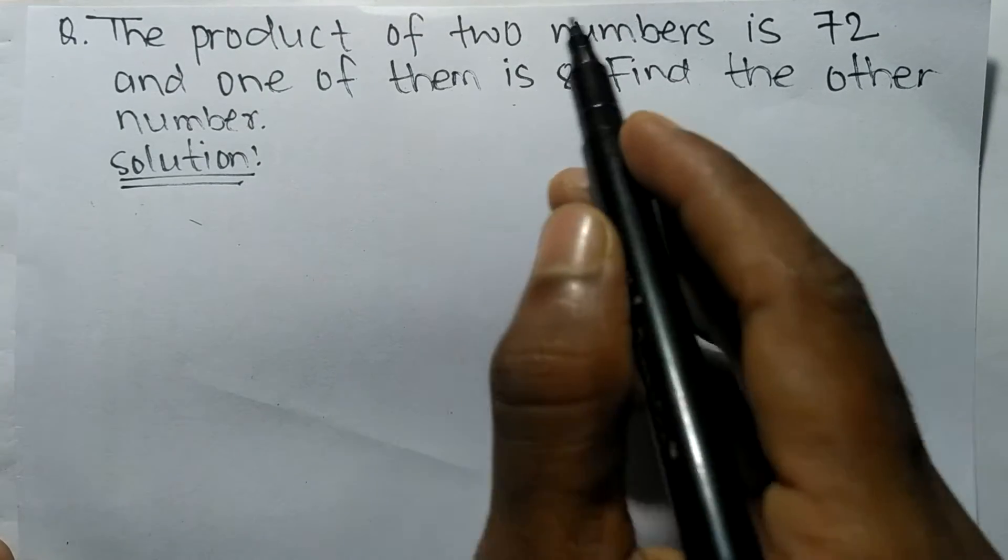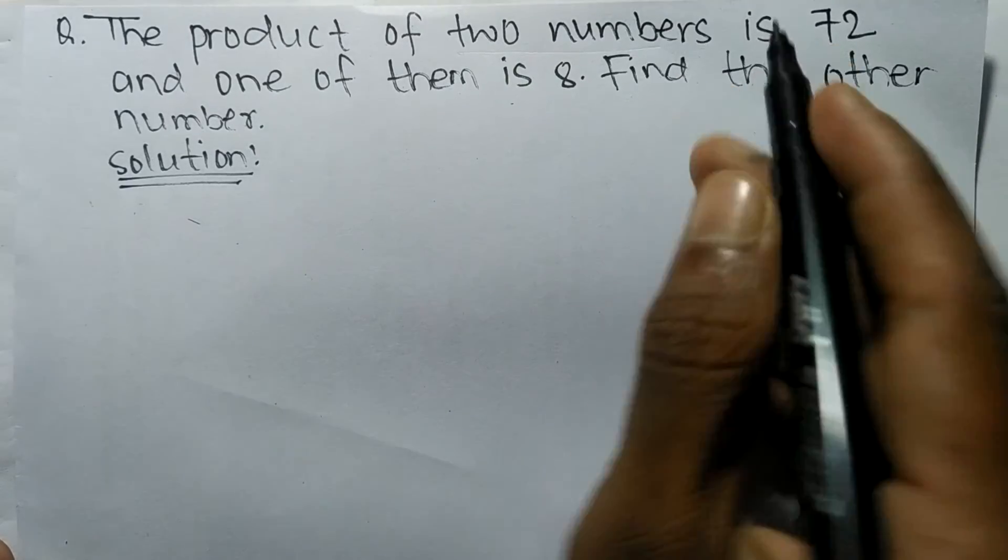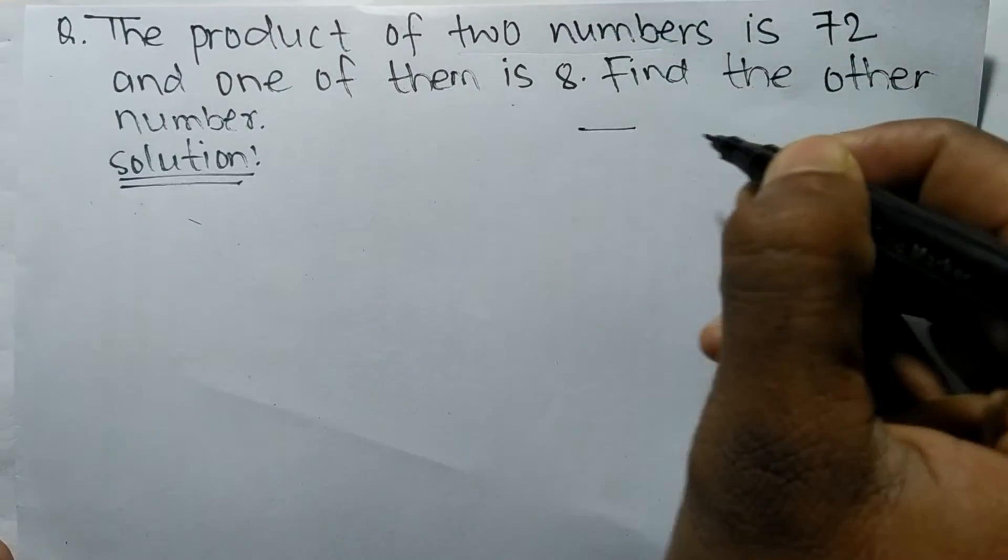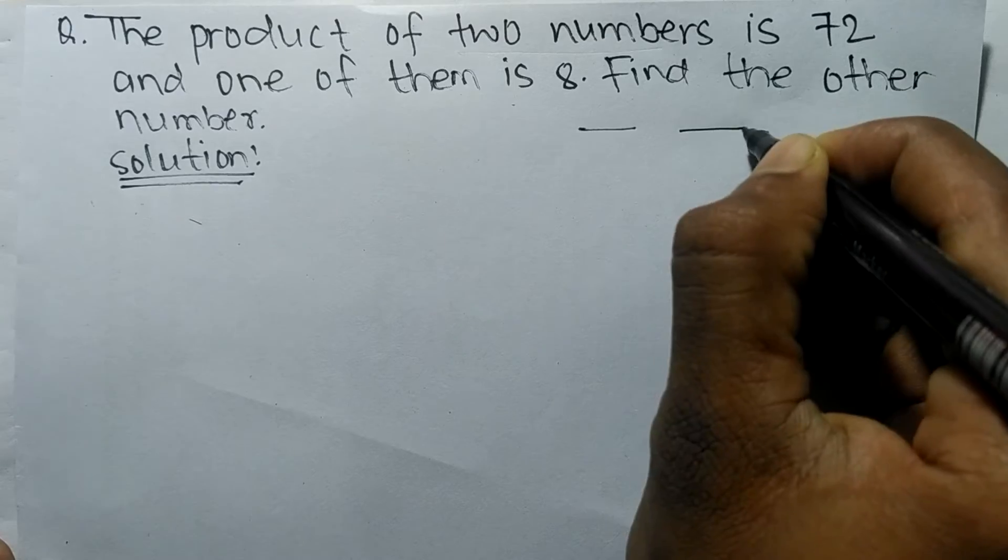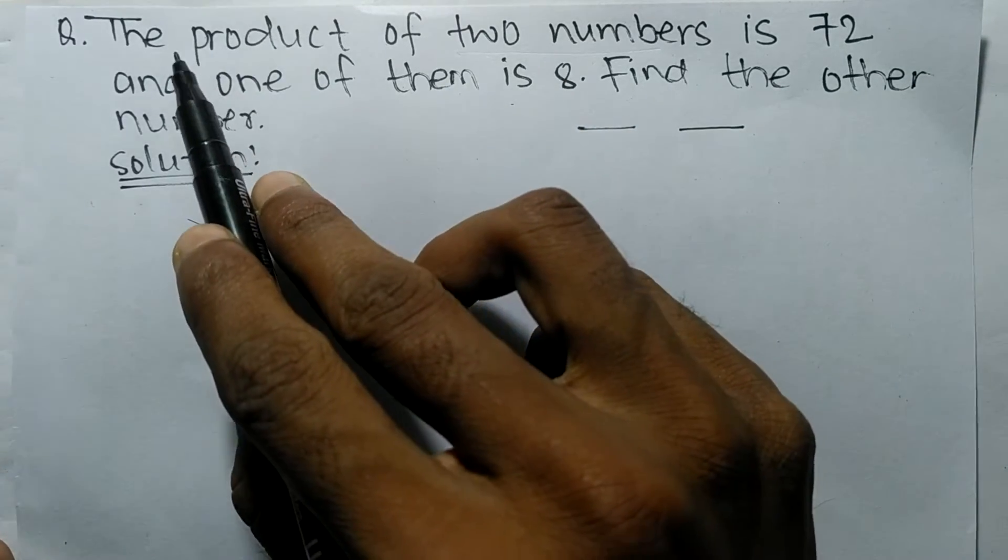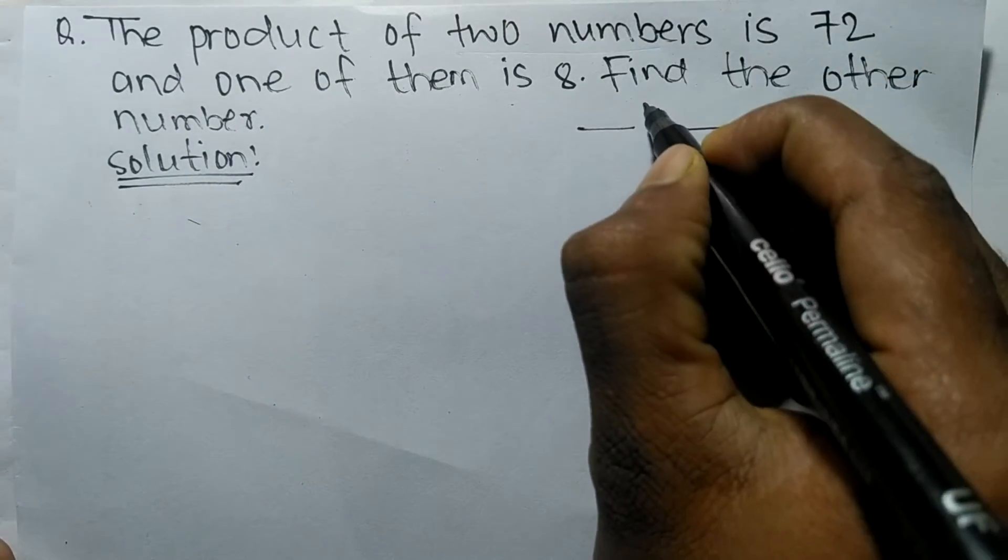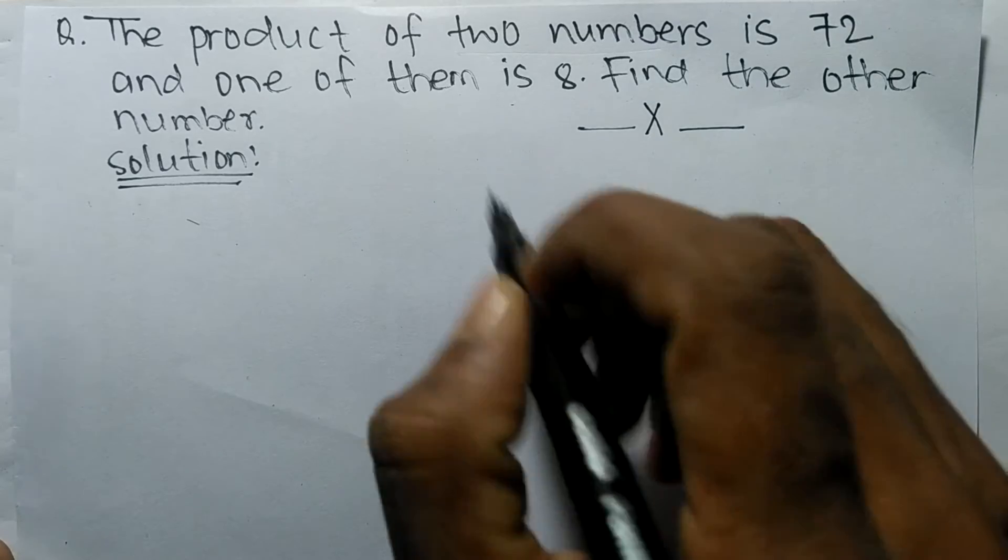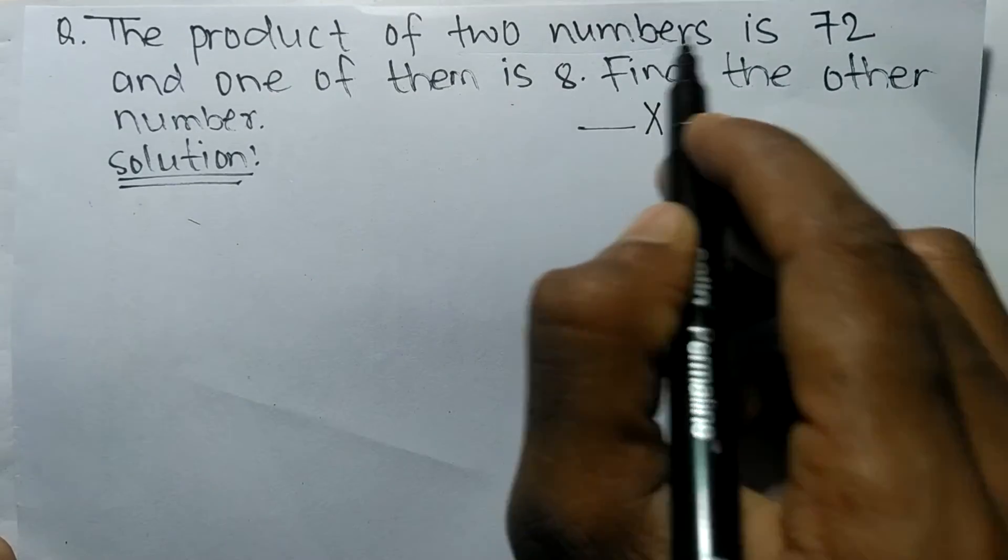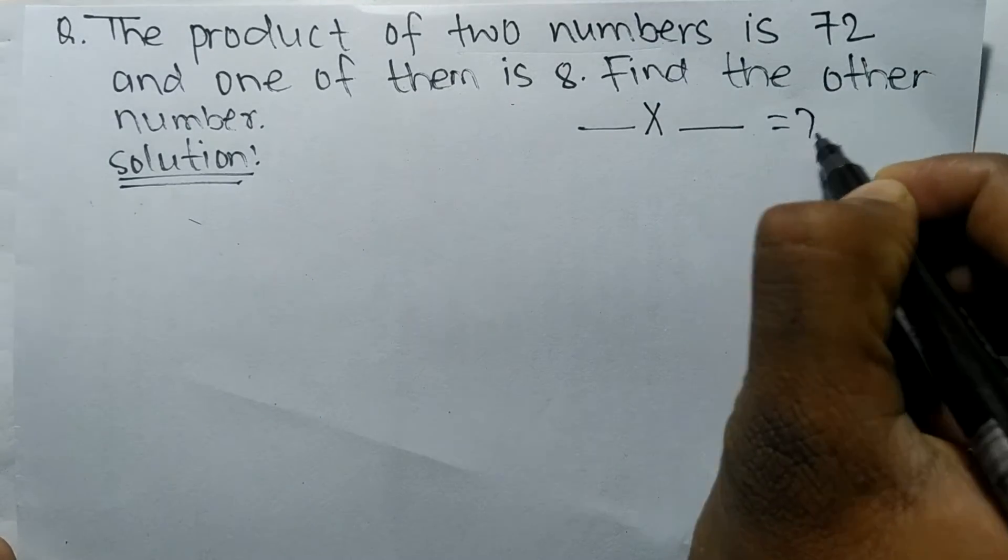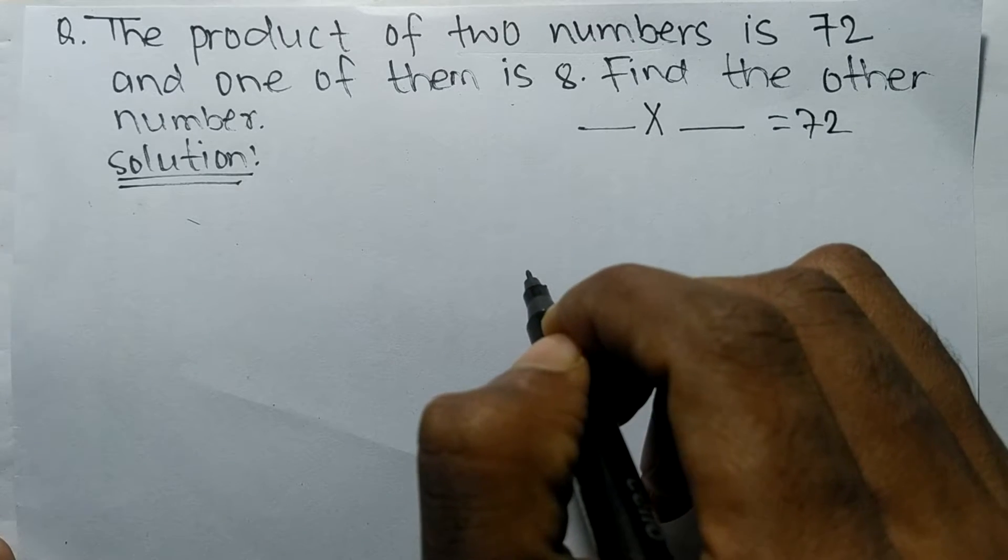In the first condition we have two numbers. Suppose this is one number and this is another one. We have given the product, product means multiply, so the product of two numbers is equal to 72.